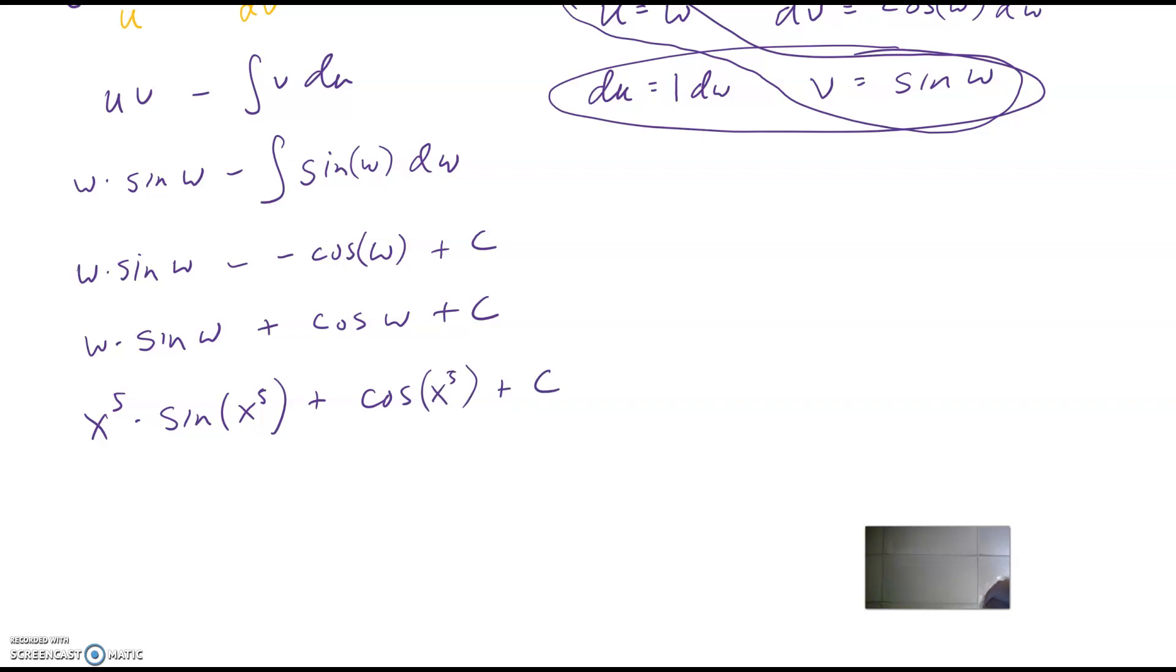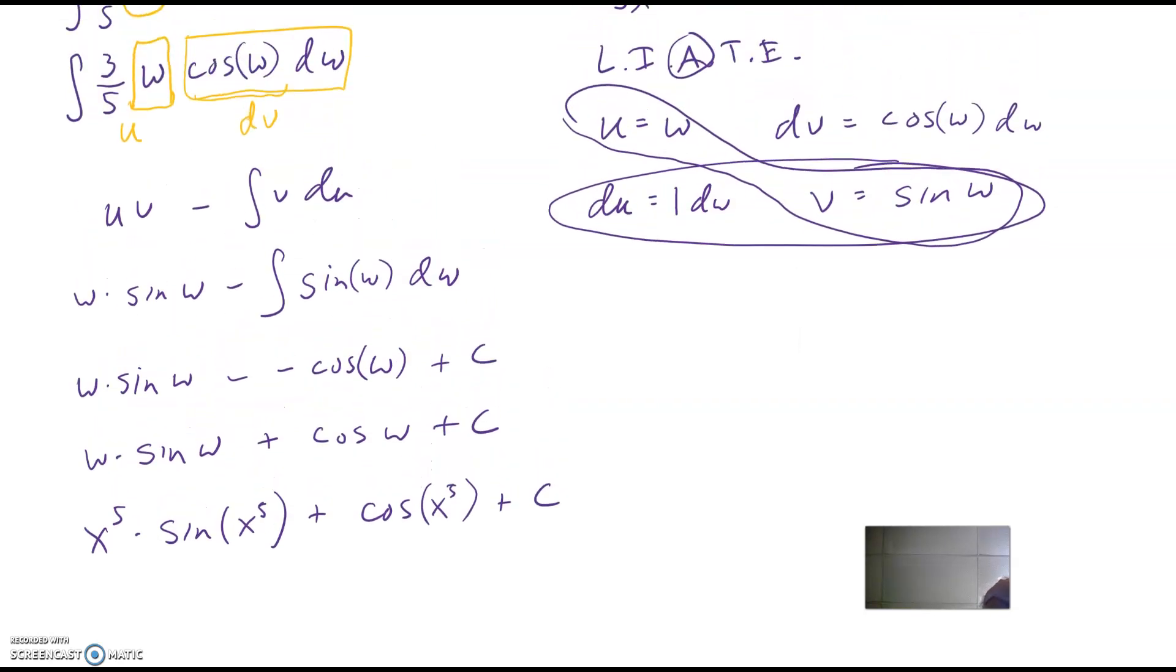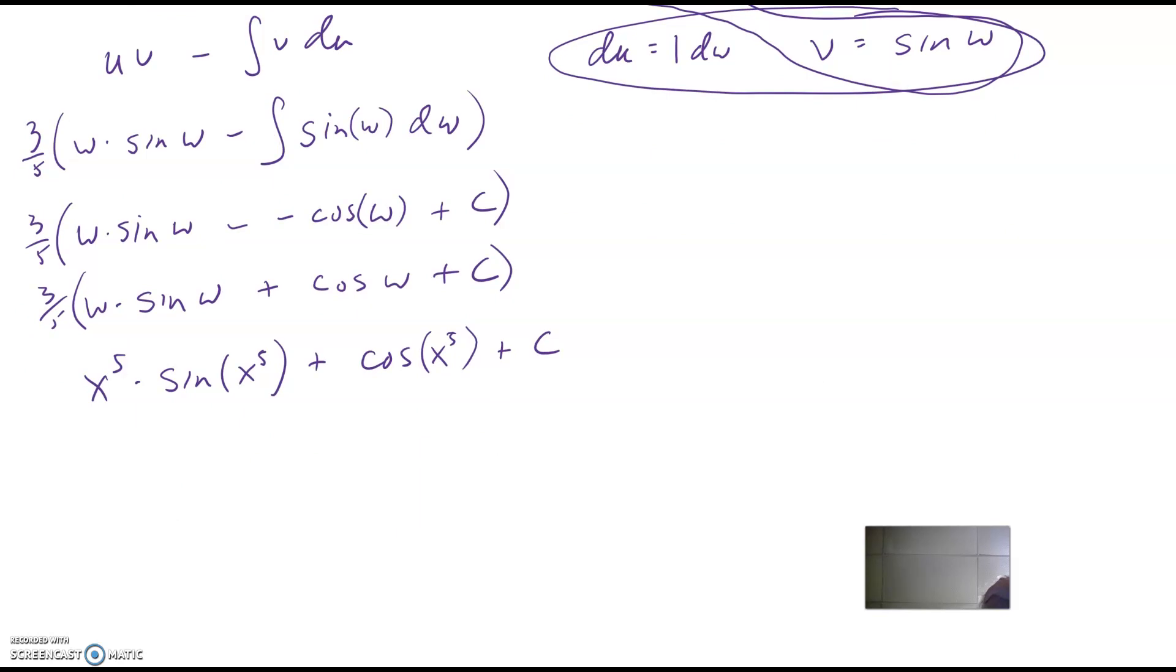Except, oh, I just remembered the darn three-fifths. So all along, there should have been a three-fifths in all of these here. So let's just copy all that down. Three-fifths, three-fifths, three-fifths. And then let's distribute the three-fifths through. So three-fifths times the x5, and then three-fifths times the cosine is three-fifths. And then three-fifths times the constant is just the constant. So that's just still plus c. All right, so there is my answer.